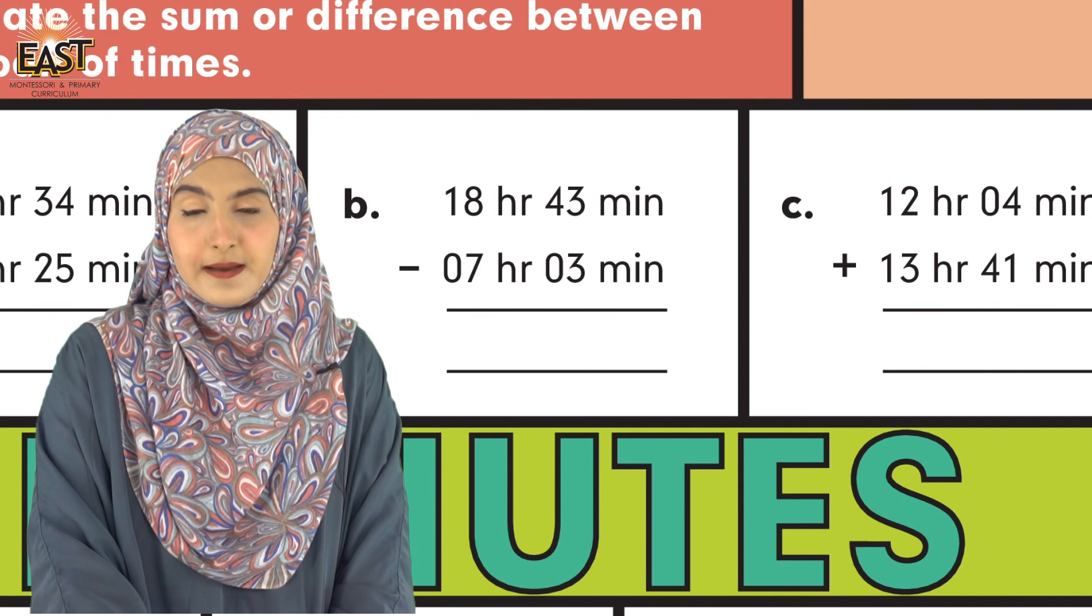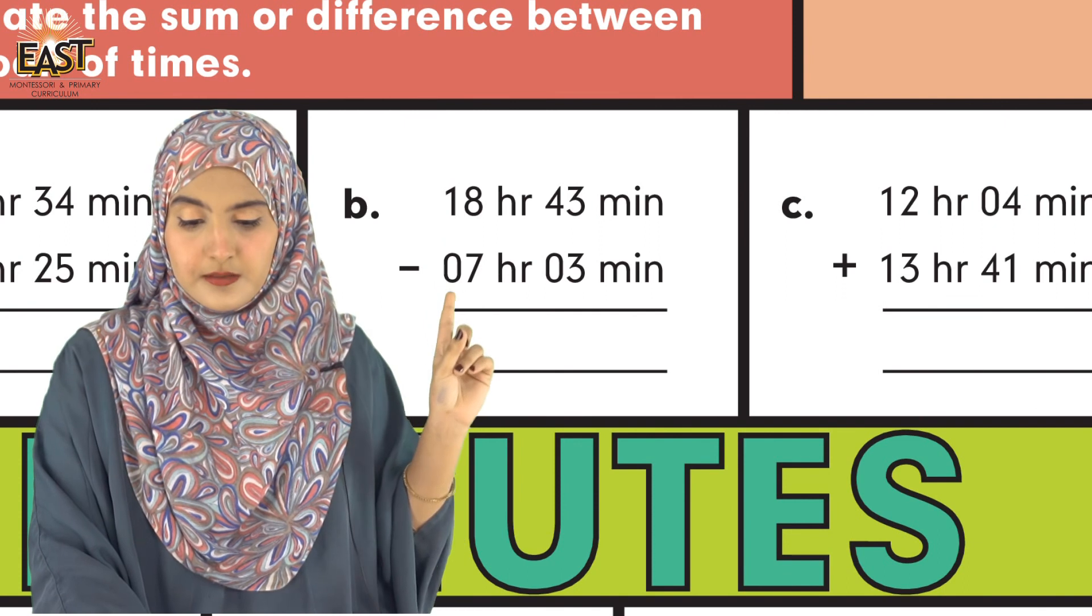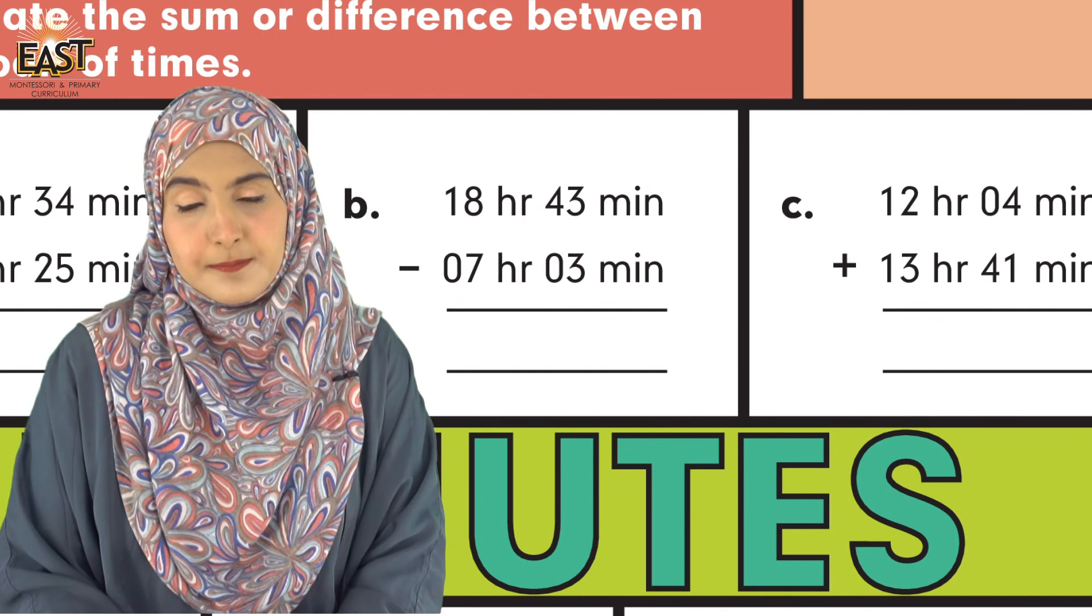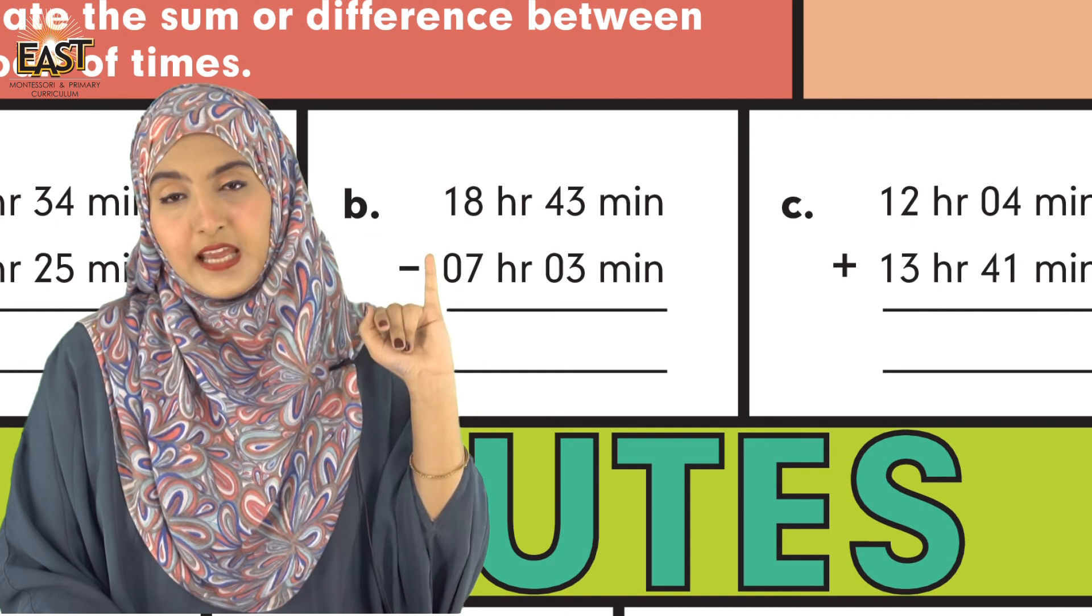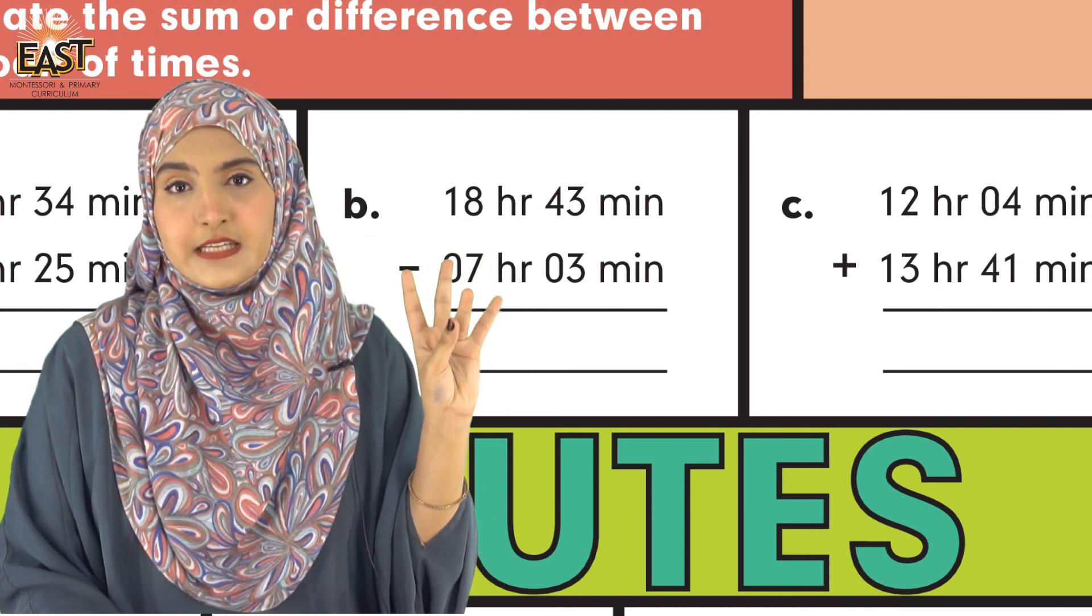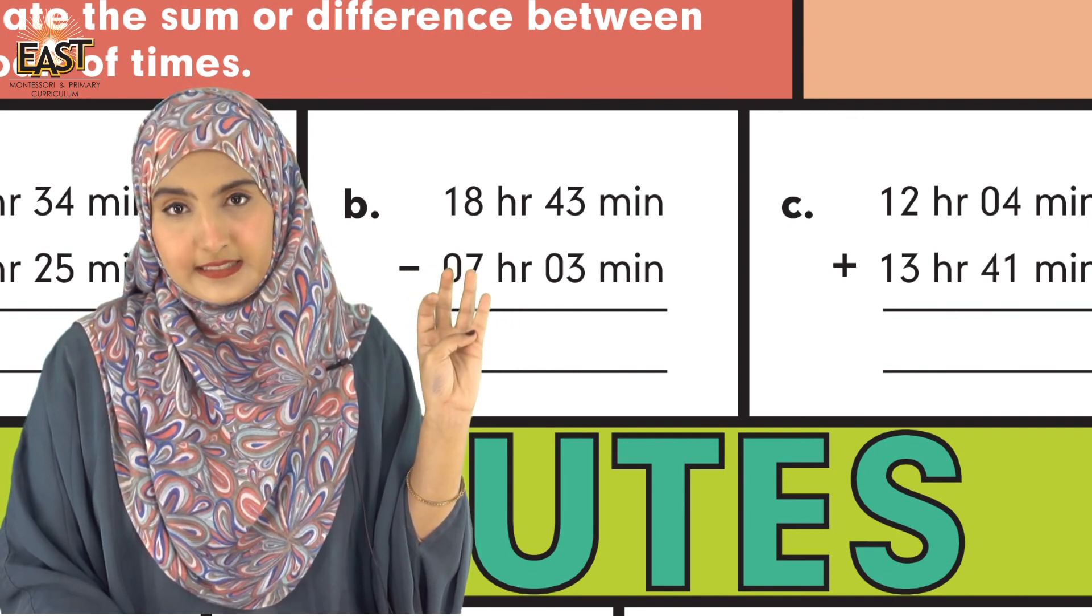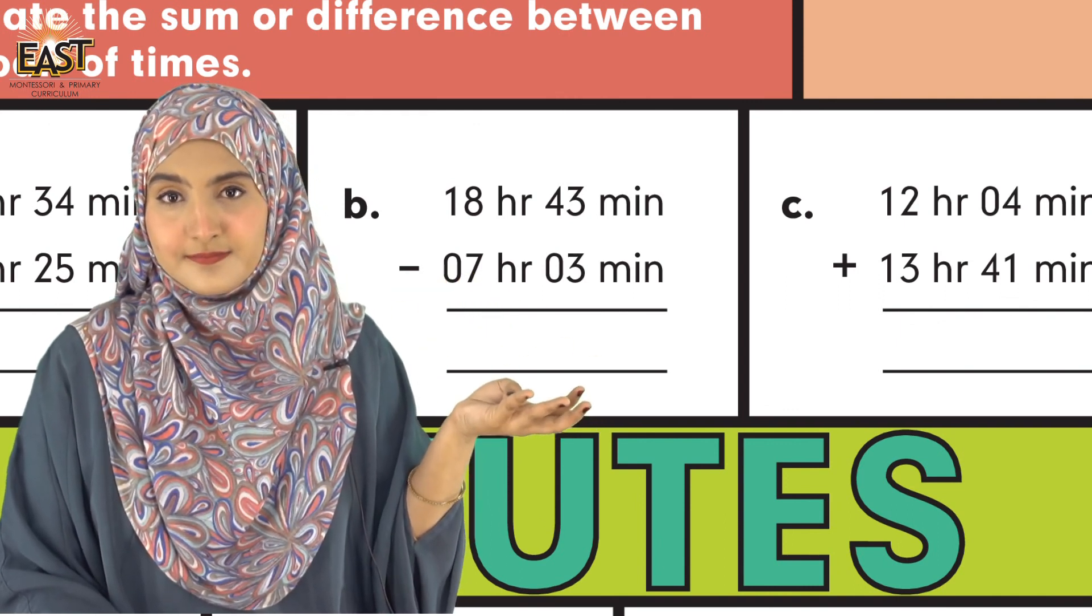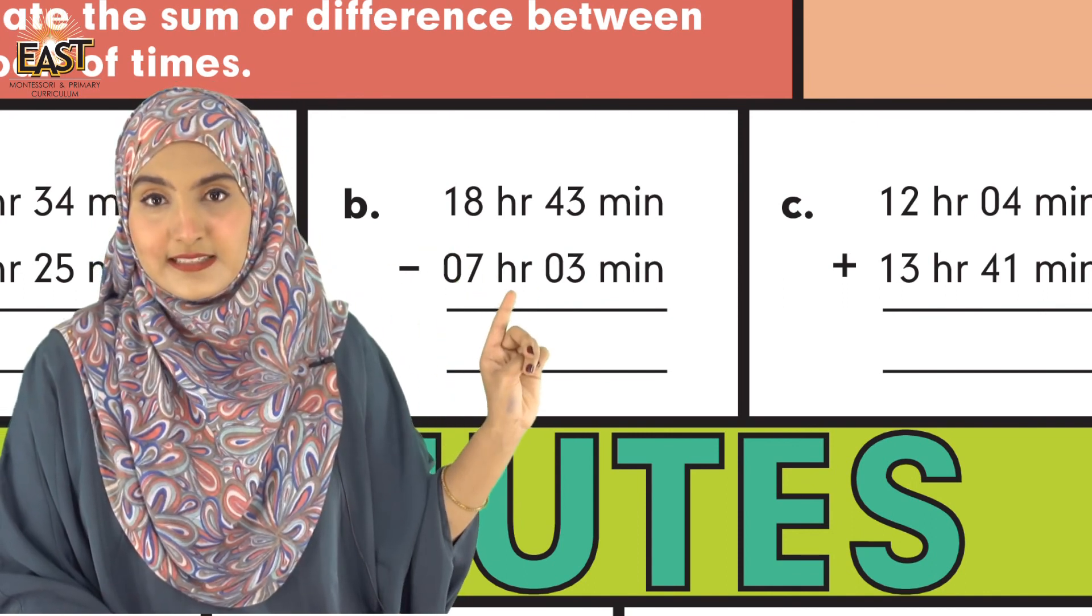Then you have hours: 18 hr subtracted from 7 hr—18 ko 7 se subtract kijiye. After 7, count up to 18: 8, 9, 10, 11, 12, 13, 14, 15, 16, 17, 18. The answer we got is 11 hr 40 min.